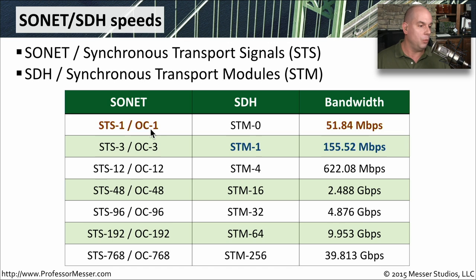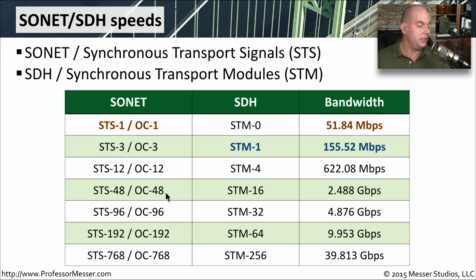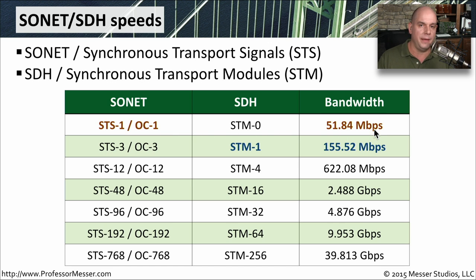If we just look at SONET, something like OC1 — that first value of OC1 — is 51.84 megabits. This is useful because as we use other terms like OC3, we're multiplying that base bandwidth, the 51.84, by 3 to get 155.52. So you can take any number like OC48, and that is 48 times an OC1. It may be easier to calculate if you happen to remember that an OC1 is 51.84 megabits.